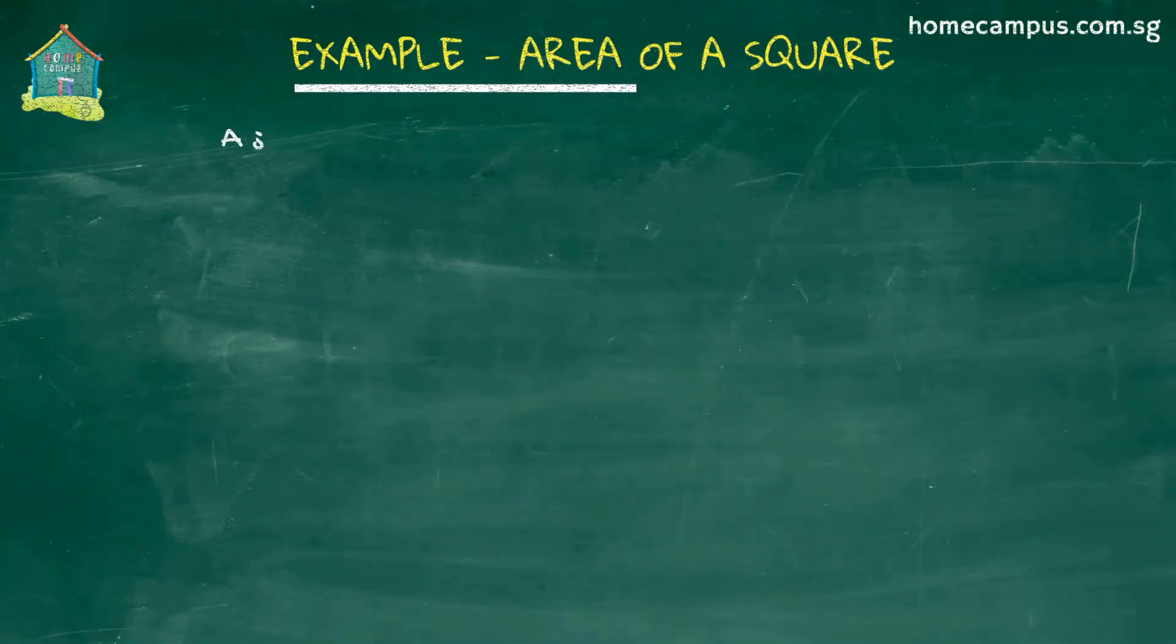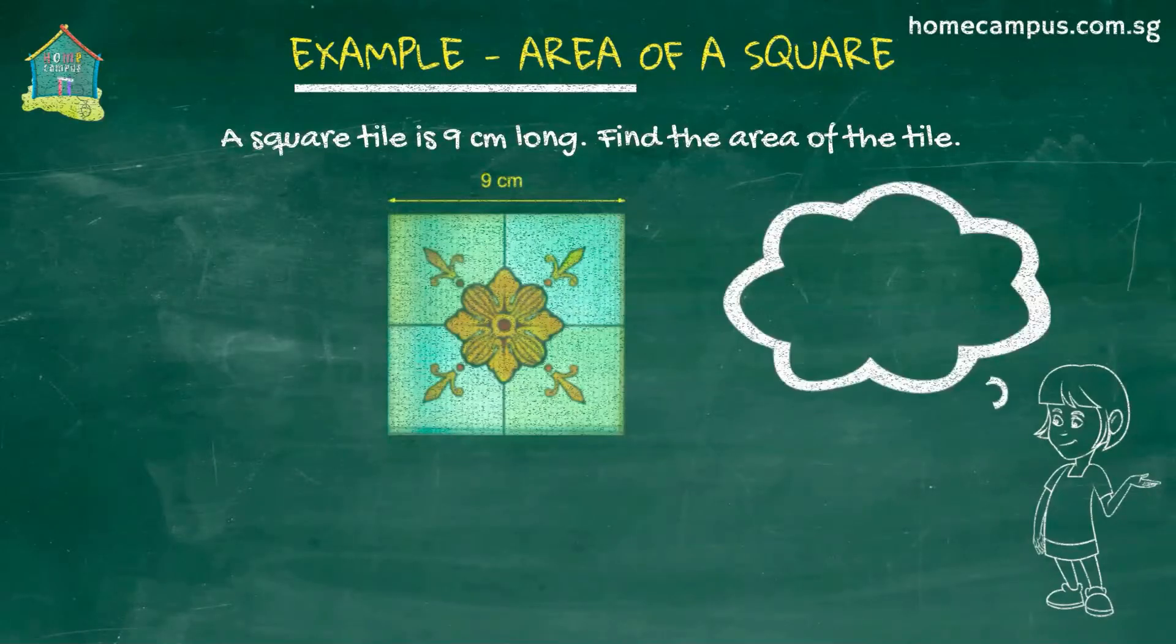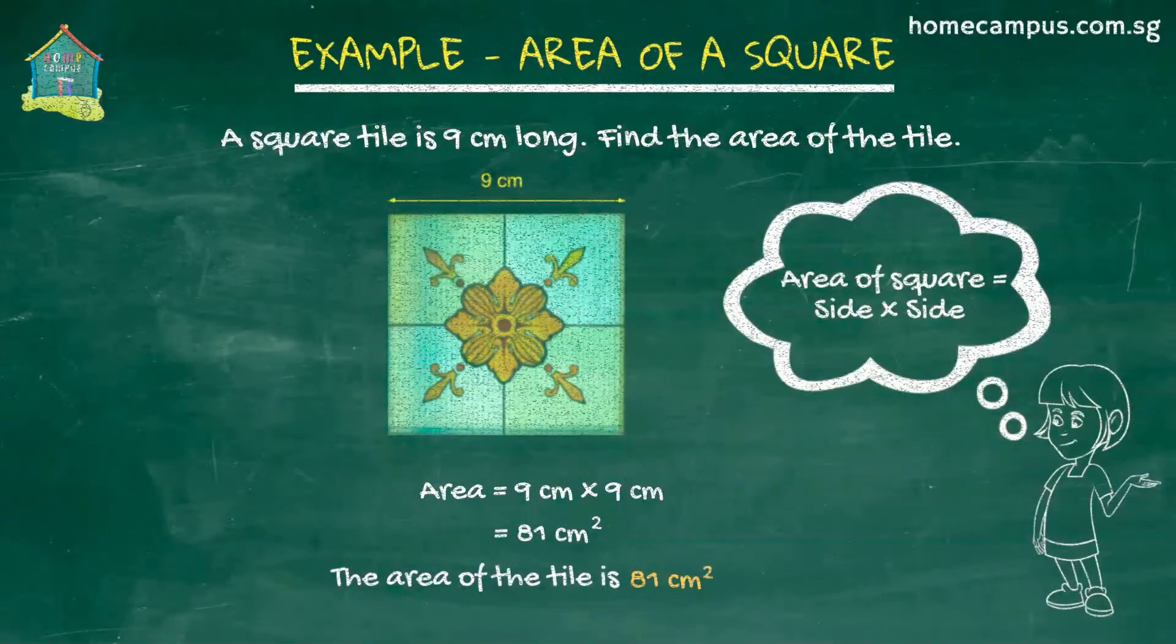Let us now solve a simple problem. A square tile is 9 centimeters long. Find the area of the tile. As we just learned, the area of a square is side times its side. So the area of the square tile is 9 centimeters times 9 centimeters, which is equal to 81 centimeters square.